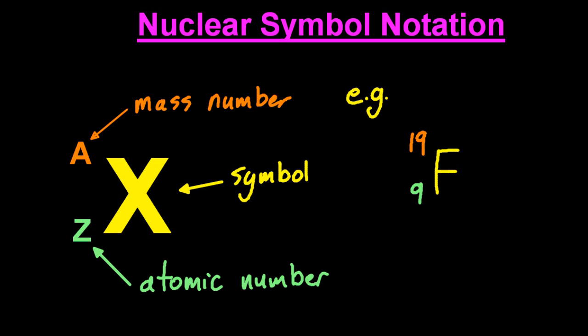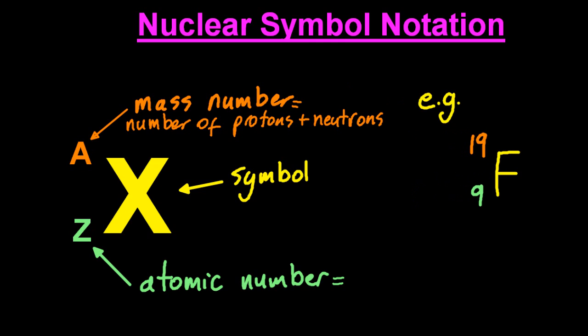What's the definition for mass number? The mass number is the number of protons and neutrons in an atom. So in the case of fluorine, there are nineteen protons and neutrons. Atomic number? That's the number of protons in an atom.